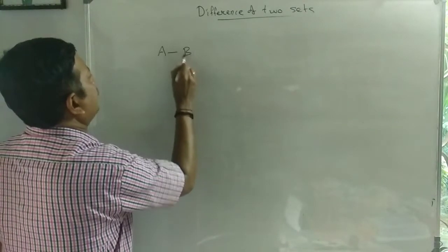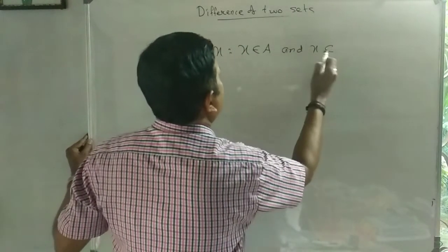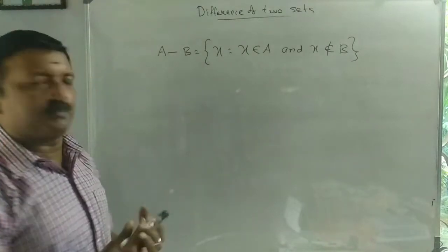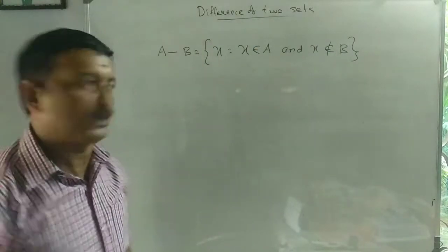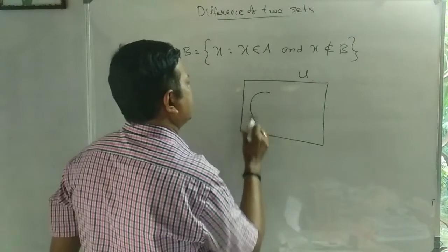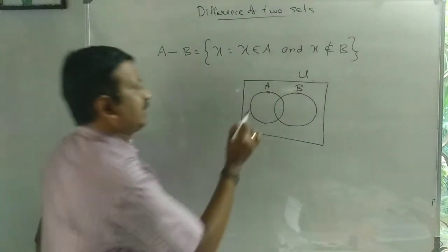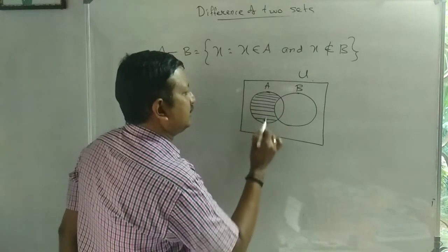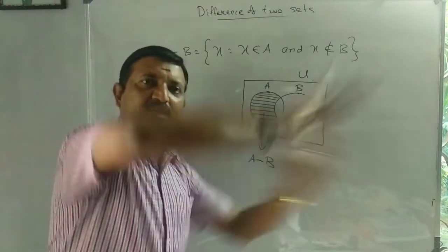A minus B in Set Builder Form: A minus B = { X : X is an element of A and X is not an element of B }. A elements, B elements — that's what we call A minus B.